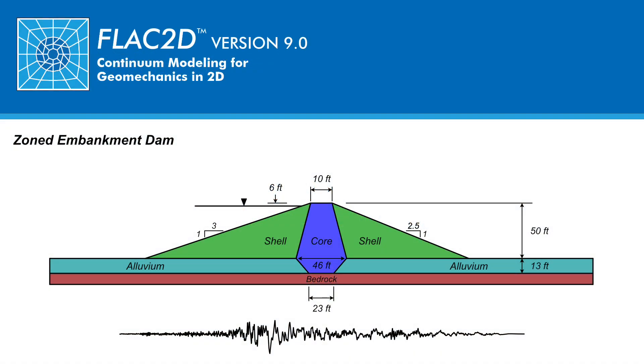The problem analyzed in this course is that of a zoned embankment dam 50 feet in height with a 3 to 1 upstream slope and a 2.5 to 1 downstream slope. The impervious, cohesive core extends down to bedrock, whereas the shells are underlined by a 13-foot thick layer of cohesionless alluvium. The reservoir level is modeled to be 6 feet below the crest.